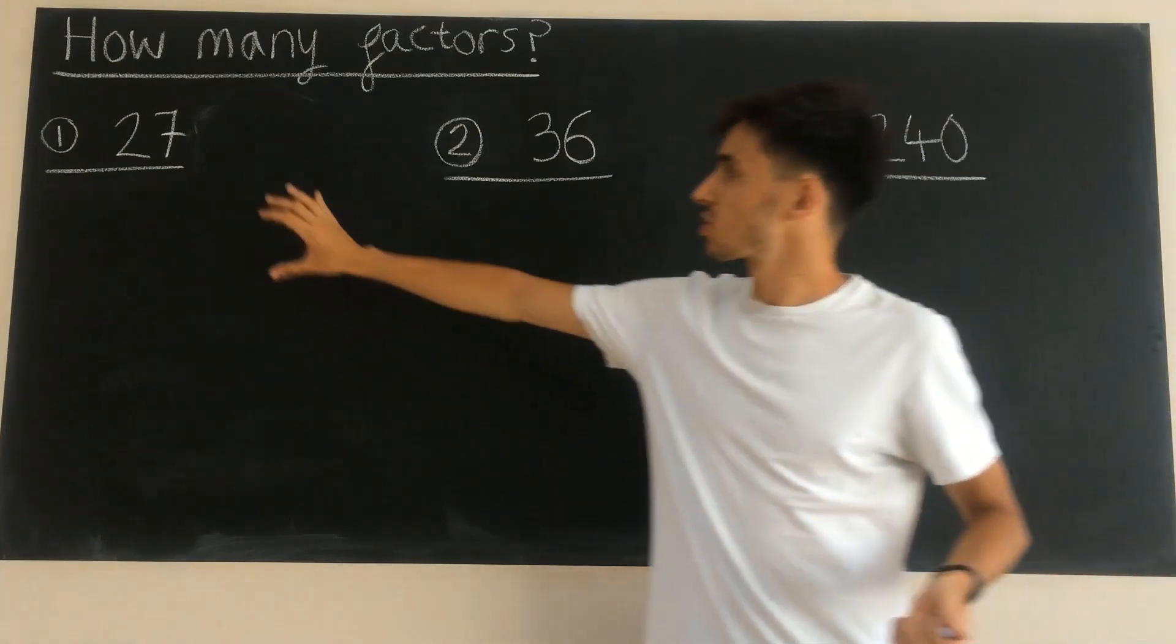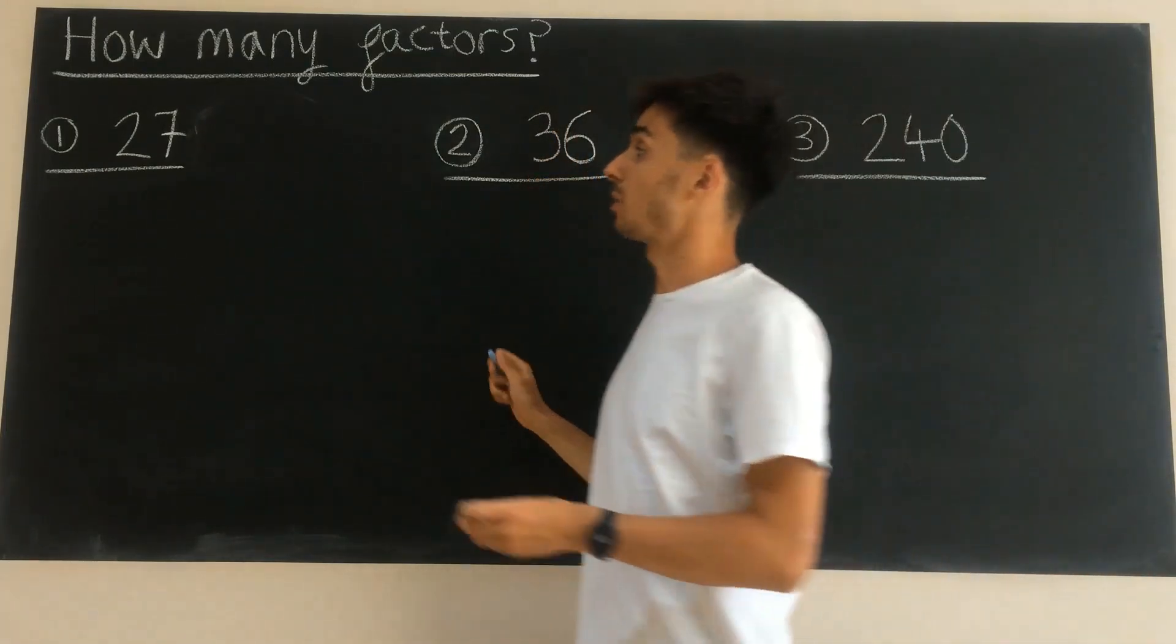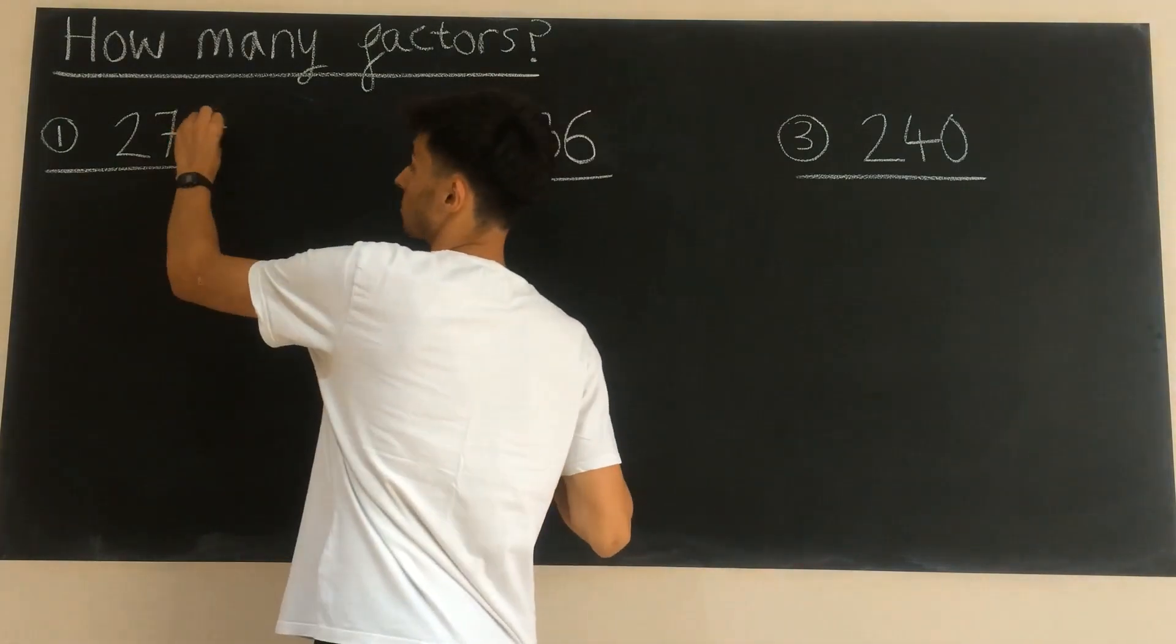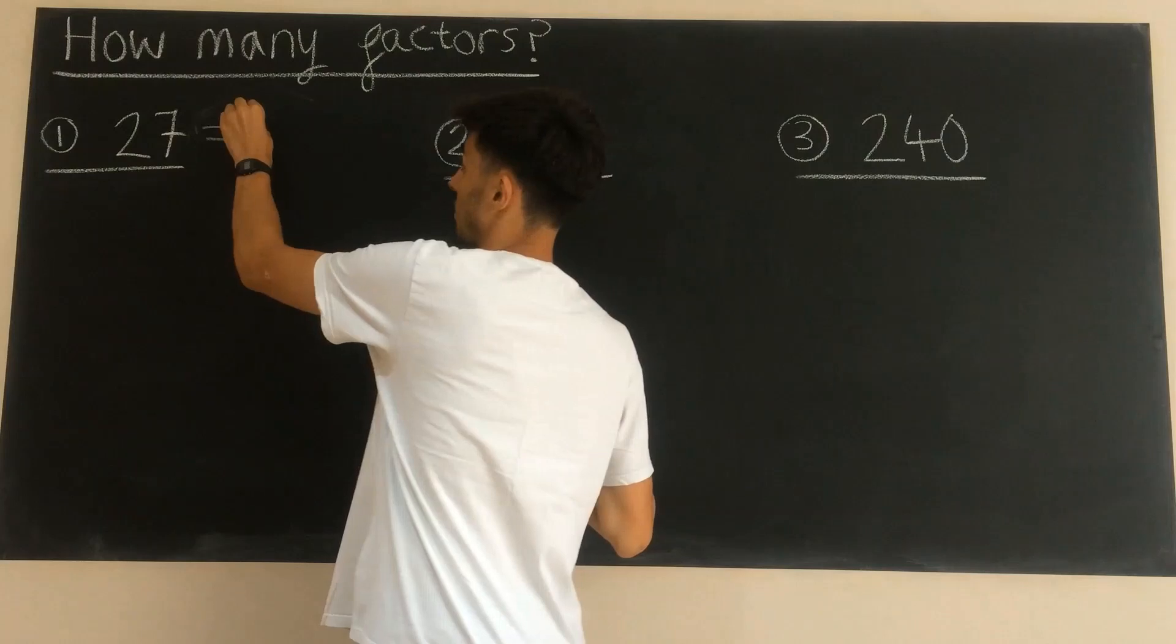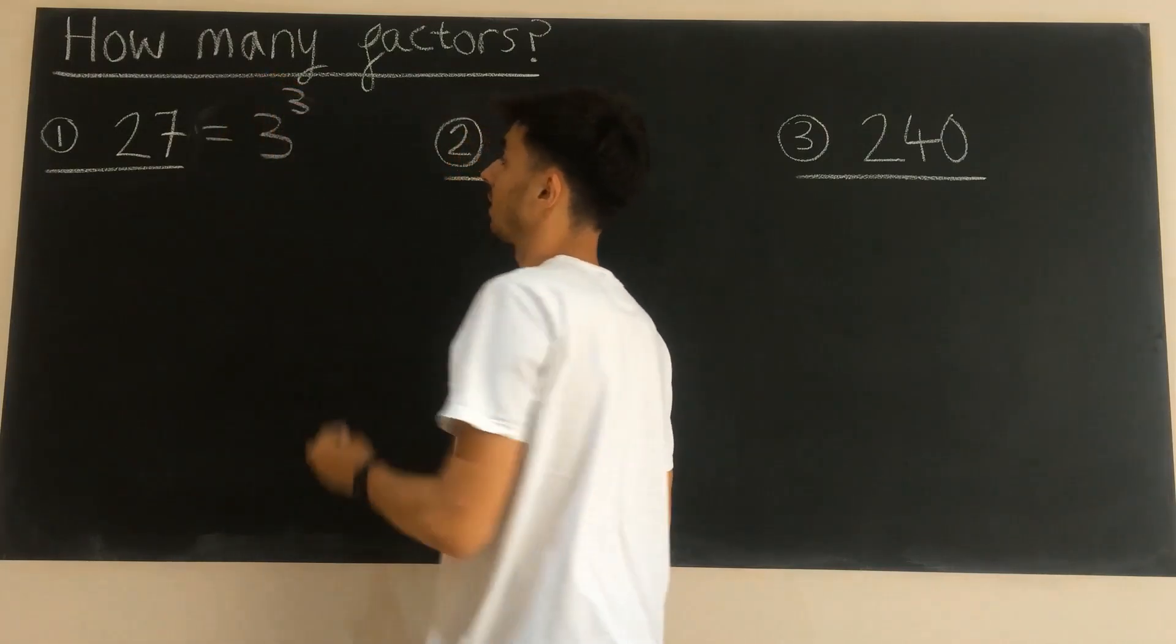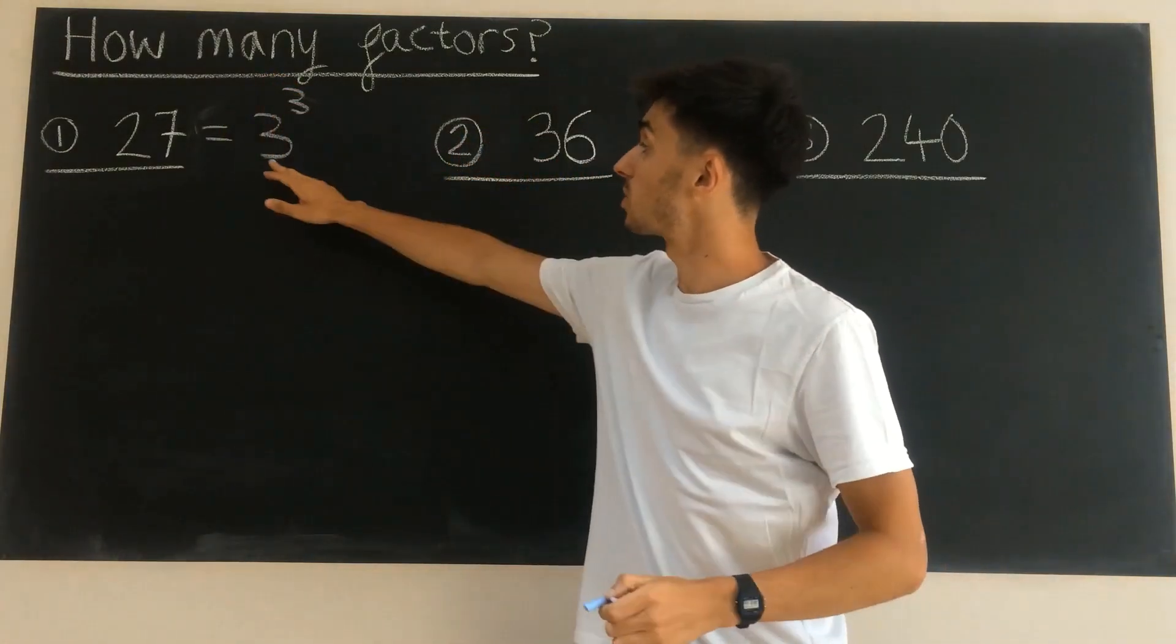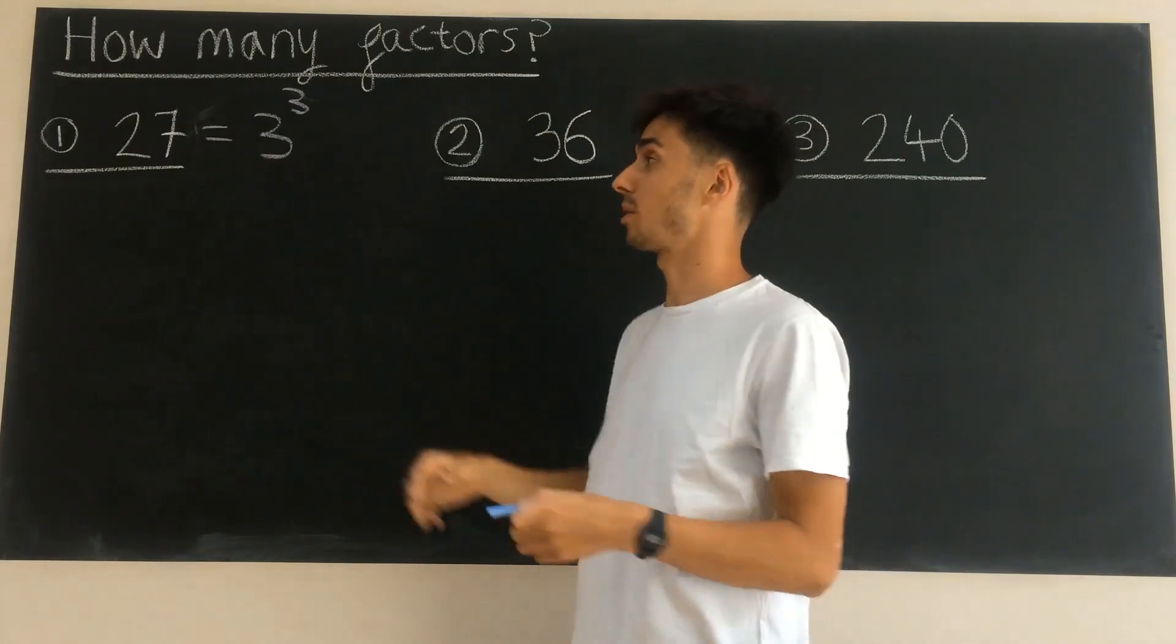First of all, we're going to start with 27 and it is vital that we factorize it first into its prime factorization, which for 27 is just 3 to the power of 3. This is a nice first example because it just has one prime factor.